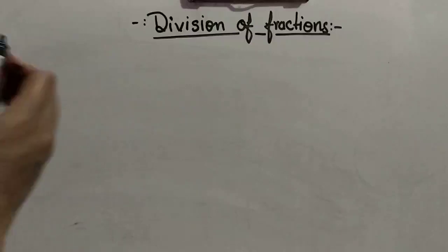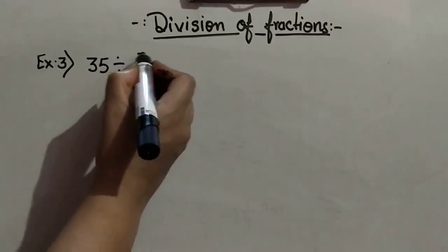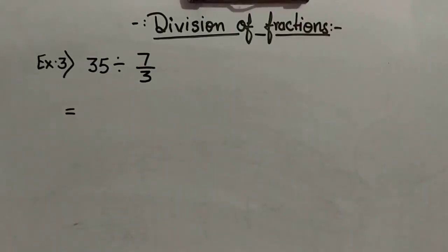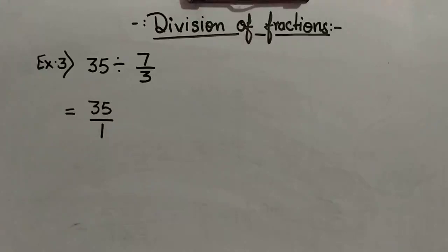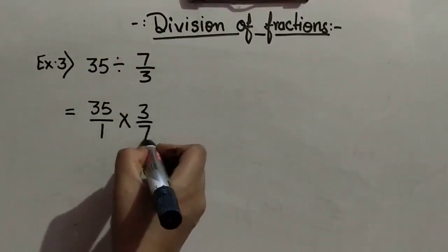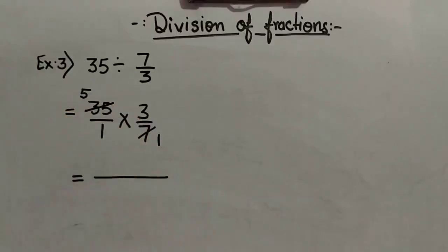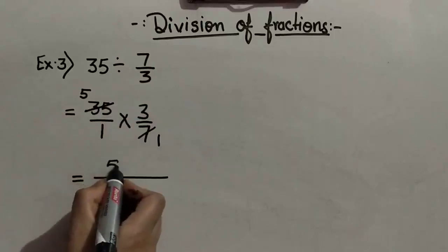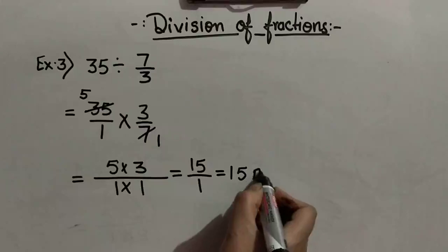One more example: 35 divided by 7 upon 3. Step 1: leave the first fraction as it is. We write 35 in the form of a fraction: 35 upon 1. Next step: turn the division sign into a multiplication sign. Then write the reciprocal of the second fraction: the reciprocal of 7 upon 3 is 3 upon 7. Simplify: 7 ones are 7, 7 fives are 35. Multiply the fractions: 5 multiplied by 3 upon 1 multiplied by 1 gives 15 upon 1, which equals 15. This is our answer.